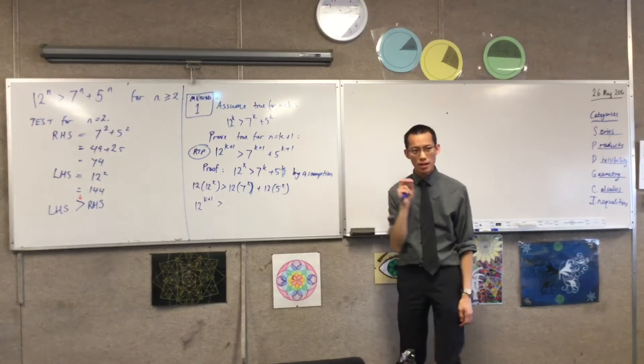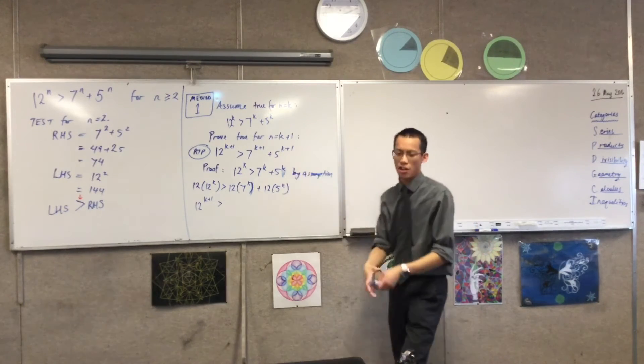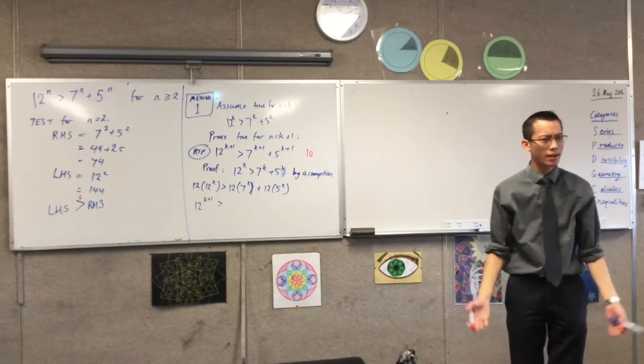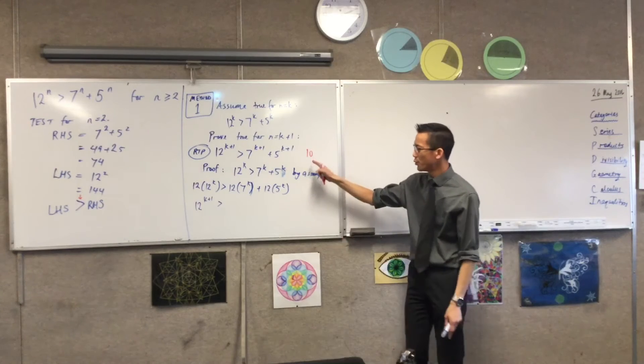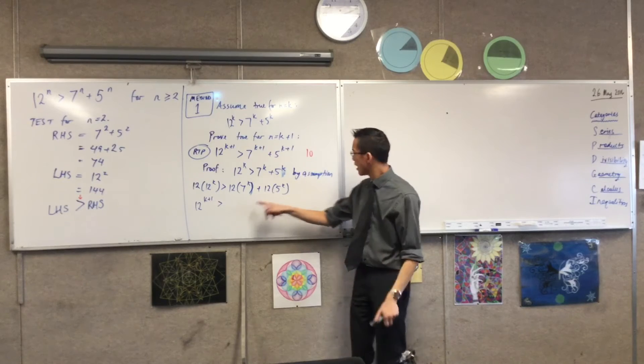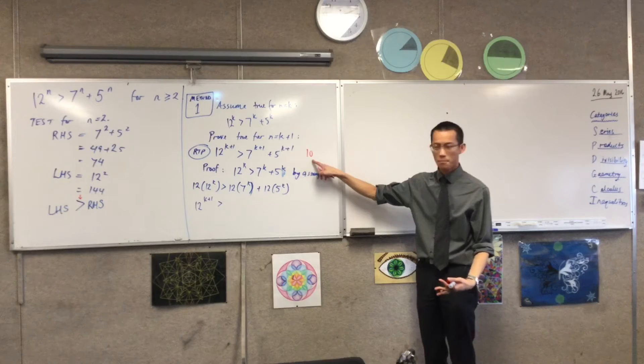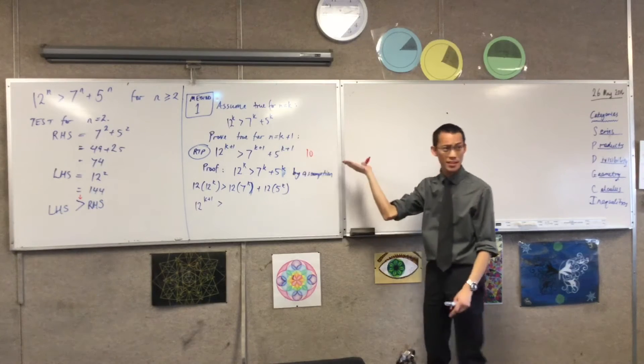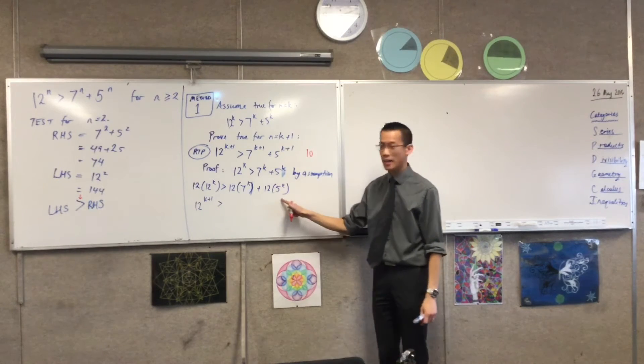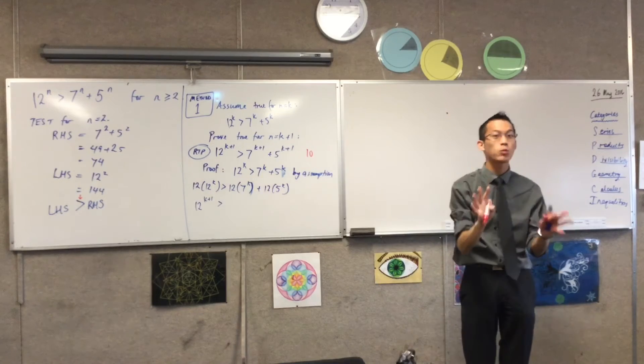But what you need to understand is if I want to prove, like, suppose this was actually a number. Like, oh, I don't know. Say, like, 10. I want to prove that something is bigger than 10. If I can prove that it's bigger than, like, if my final line here has a 10 in it, cool. But if I have something bigger than this, like, say, 11 or 12 or 1,000, then if I'm bigger than 1,000, I'll be bigger than 10 as well. Right? Does that make sense? So what I want over here on the right-hand side is either this or something bigger than that. Does that make sense? That's what I'm aiming for.